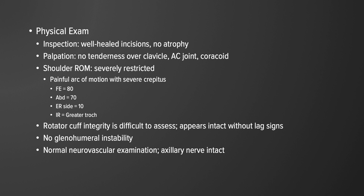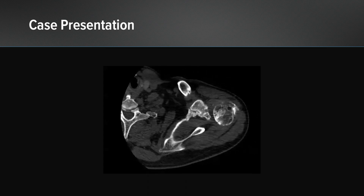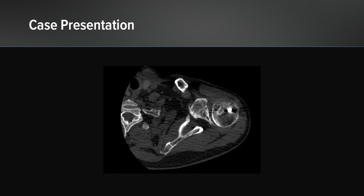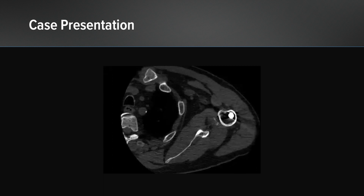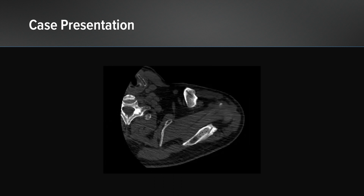There was no glenohumeral instability and he had an otherwise normal neurovascular examination, in particular with regard to his axillary nerve function. Here we see axial cuts of the patient's glenohumeral joint, and fortunately there's minimal scatter from the humeral nail. Thus we're able to still use the Arthrex VIP 3D templating system.